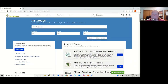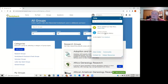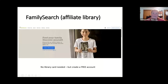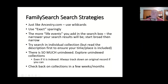Under the question mark you can also find the FamilySearch Wiki and other helpful things. For search strategies: just like Ancestry.com, you can use wildcards — the asterisk and the question mark. There is a checkbox on the search page that says 'Exact' — use that sparingly because it limits your results. Just like Ancestry, the more life events you add into the search box the narrower your results will be, so start broad with maybe just a name and birth year, then narrow down on the left-hand side.